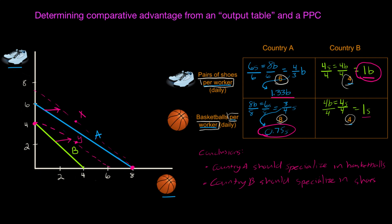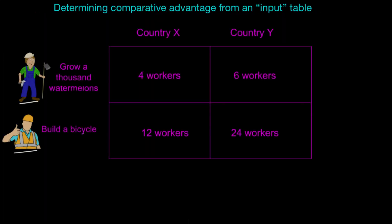We just finished demonstrating how to calculate opportunity costs and determine who has the comparative advantage in goods production using an output table or production possibilities curve. In this video, we're going to look at how to calculate opportunity cost and determine who has a comparative advantage in two goods production using an input table.